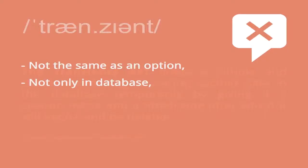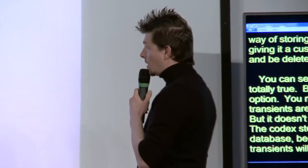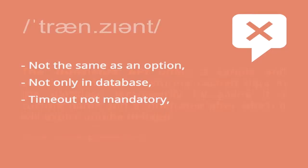It's not only in the database. Because if you are using memcache or opcache, the transients won't be stored in the database, but directly in the server's memory. The codex doesn't talk about that. Also, the timeout - the time frame - is not mandatory. The codex is not telling us that it's not mandatory. You could add timeouts to make your transients expire.